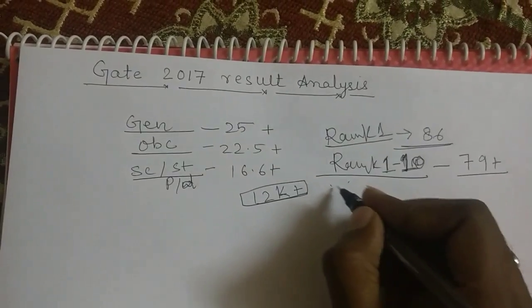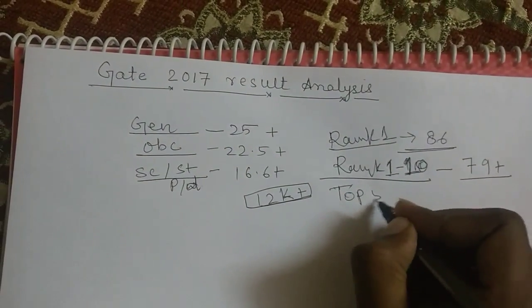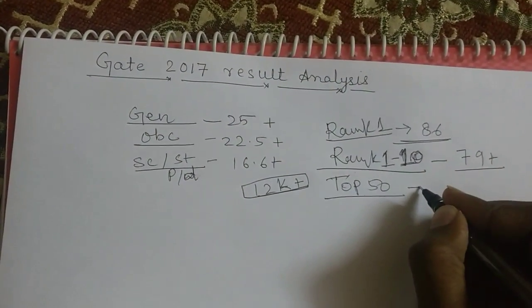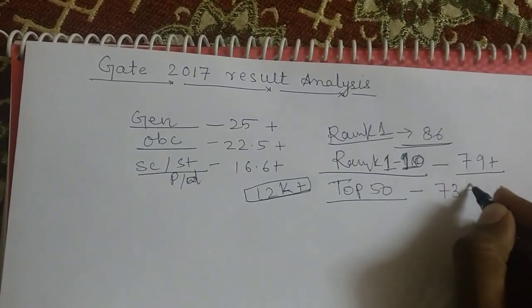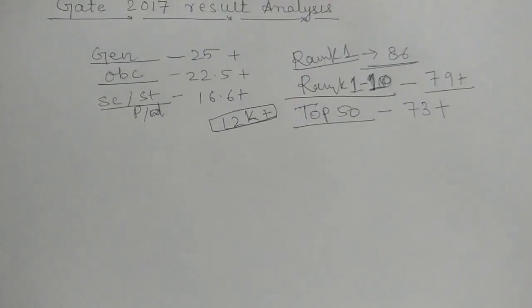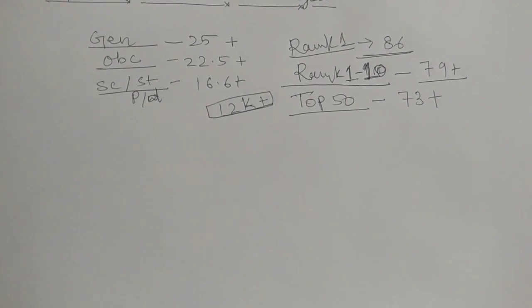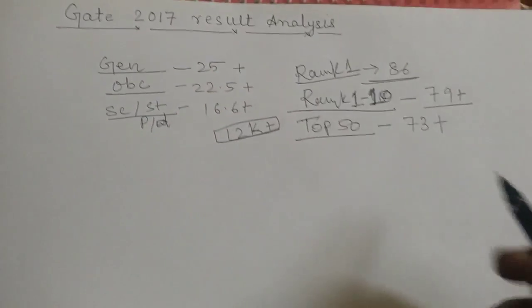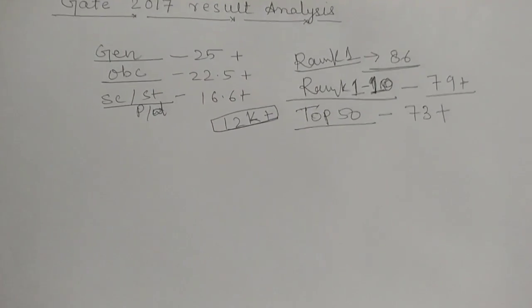Like this top 50, to be in top 50, the marks were 73 plus. So, if you have desire to get admission in IIT Bombay or IISC Bangalore, you need to get 73 marks.